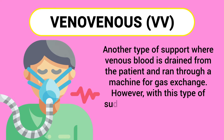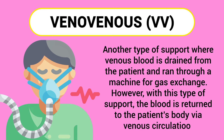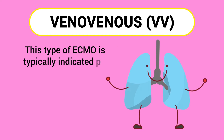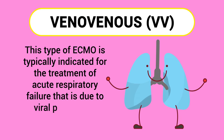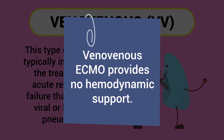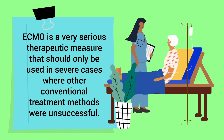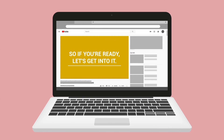Veno-venous ECMO is another type of support where venous blood is drained from the patient and run through a machine for gas exchange; however, with this type the blood is returned via venous circulation. It is typically indicated for the treatment of acute respiratory failure due to viral or bacterial pneumonia. Unlike veno-arterial ECMO, veno-venous ECMO provides no hemodynamic support. ECMO is a very serious therapeutic measure that should only be used in severe cases where other conventional treatment methods were unsuccessful.